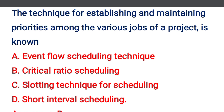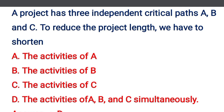Next question: the technique for establishing and maintaining priorities among the various jobs of a project is known as — option A: even flow scheduling technique, option B: critical ratio scheduling, option C: slotting technique for scheduling, option D: short interval scheduling. The correct answer is option D: short interval scheduling.